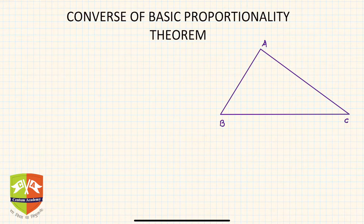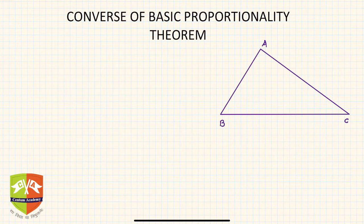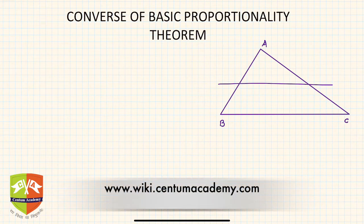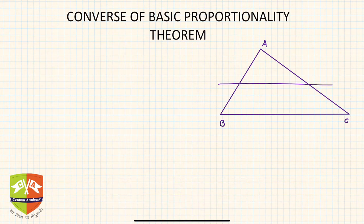Welcome friends. We have been doing lots of triangles in these sessions, and this is a very important part of your syllabus. Let's understand another theorem — the Converse of the Basic Proportionality Theorem. Basic Proportionality Theorem says that if there is a line which is parallel to the third side of a triangle, then it divides the other two sides proportionately.